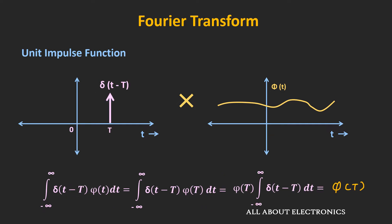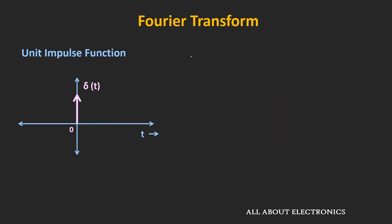Similarly, when we multiply this time-shifted unit impulse function with another function φ and integrate it from minus infinity to plus infinity, then we get the value of this function at time t is equal to T. So now let's see the Fourier transform of this unit impulse function. We know that the Fourier transform of any function is equal to integration from minus infinity to plus infinity of the function itself times e to the power minus j ωt dt.